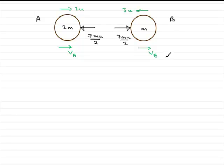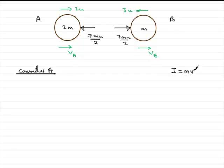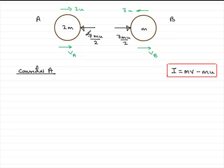To find the speed of A immediately after the impulse, we consider particle A. You should know that impulse is equal to change in momentum — that is, I equals mv minus mu, the final momentum minus the initial momentum. This is a standard formula. We're dealing with vector quantities here, so direction matters, and you need to set up a positive direction. I'm going to set the positive direction in the direction of the impulse on A, which is to the left.